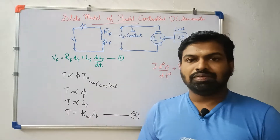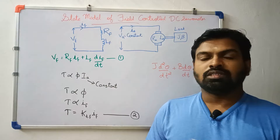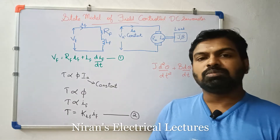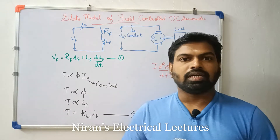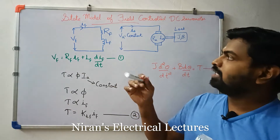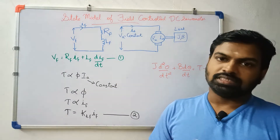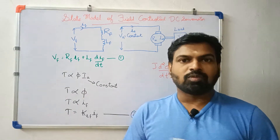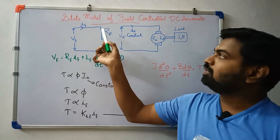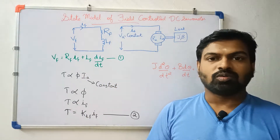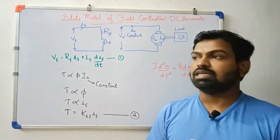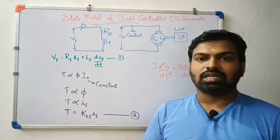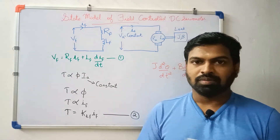Hello friends, we are going to talk about the state model of field control DC servomotor. We are going to talk about the field and armature. The field winding is the most control. VF is the voltage in the field winding, and VF is the most control. We are going to talk about the supply constant.